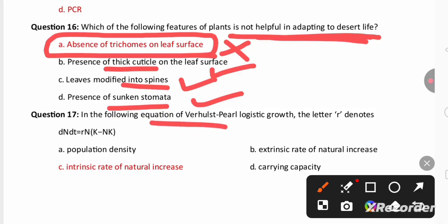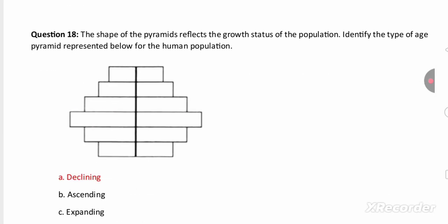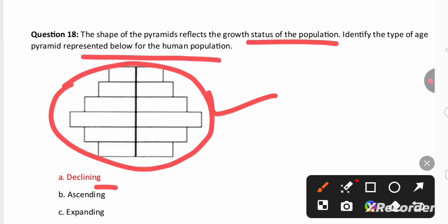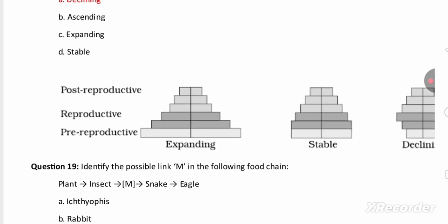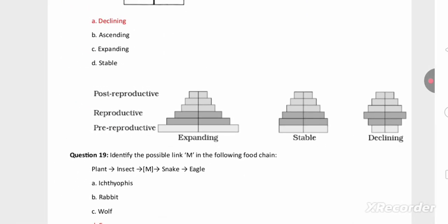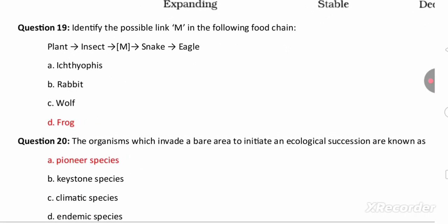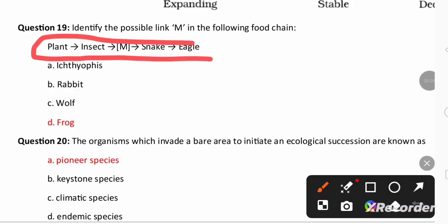In the following equation of Verhulst-Pearl logistic growth, r denotes intrinsic rate of natural increase. So you can find one pyramid shape. This pyramid shape reflects the growth status of the population. Identify the type of age pyramid represented below for the human population. As you can see this, it is a declining pyramid. Here all the three graphs are there: expanding, stable, decline. All the three showing pre-reproductive, reproductive and post-reproductive population.